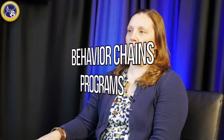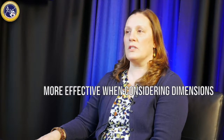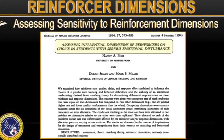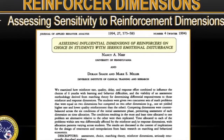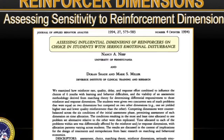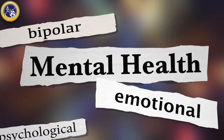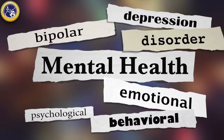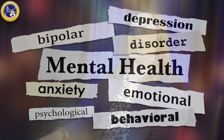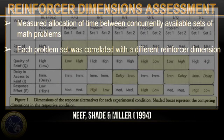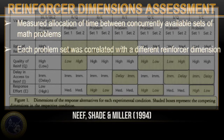Behavior change programs can likely be made more effective when these dimensions are taken into consideration. Neve, Shade, and Miller in 1994 described a reinforcer dimension assessment using brief functional analysis methodology as described by Cooper and colleagues in 1990. The assessment measured the effects of reinforcer delay, rate, quality, and response effort on the response allocation of students with emotional and developmental disabilities, using allocation of time between concurrently available sets of math problems to assess preference for high or low values of each dimension.